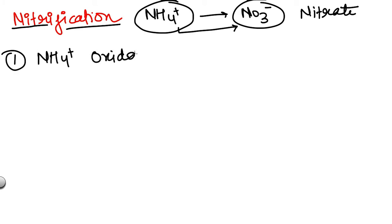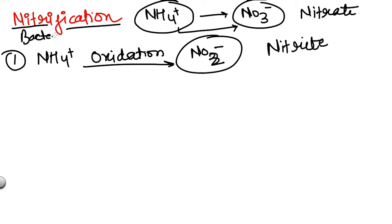Here oxidation is taking place and during this oxidation NH4+ will be oxidized into NO2- which is nitrite. The nitrification process is performed by bacteria. Two different types of bacteria are involved. Here the NH4+ is oxidized into nitrite ion by bacteria which is called nitrosomonas.